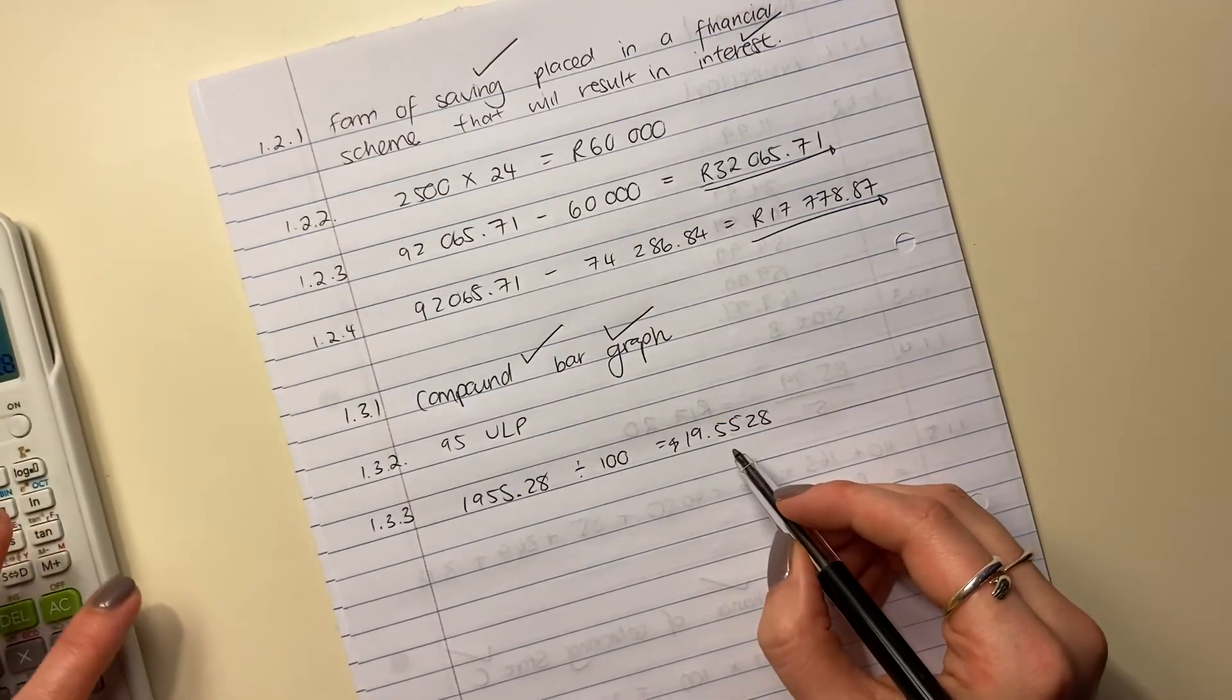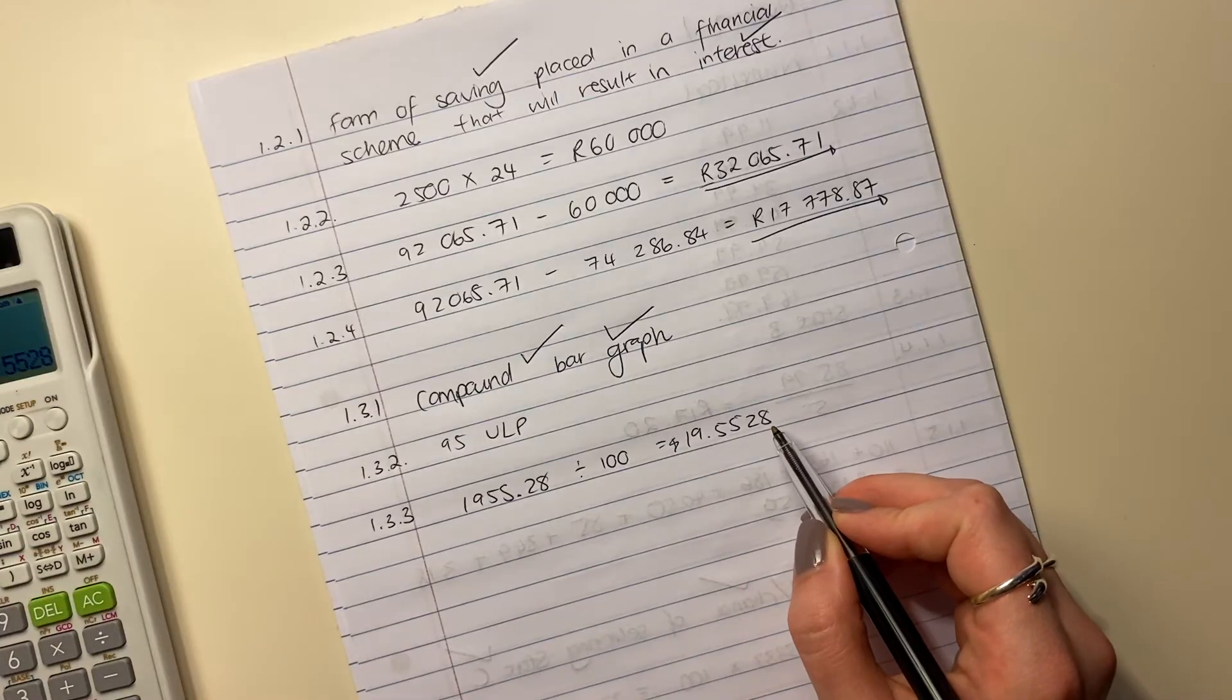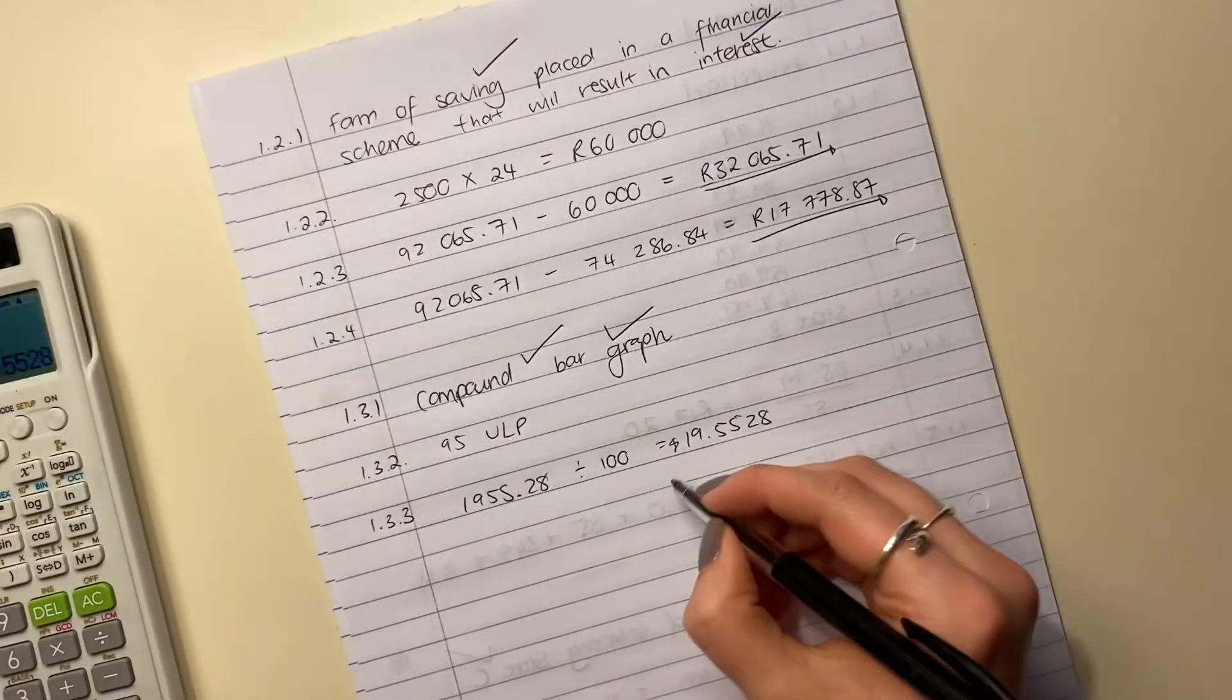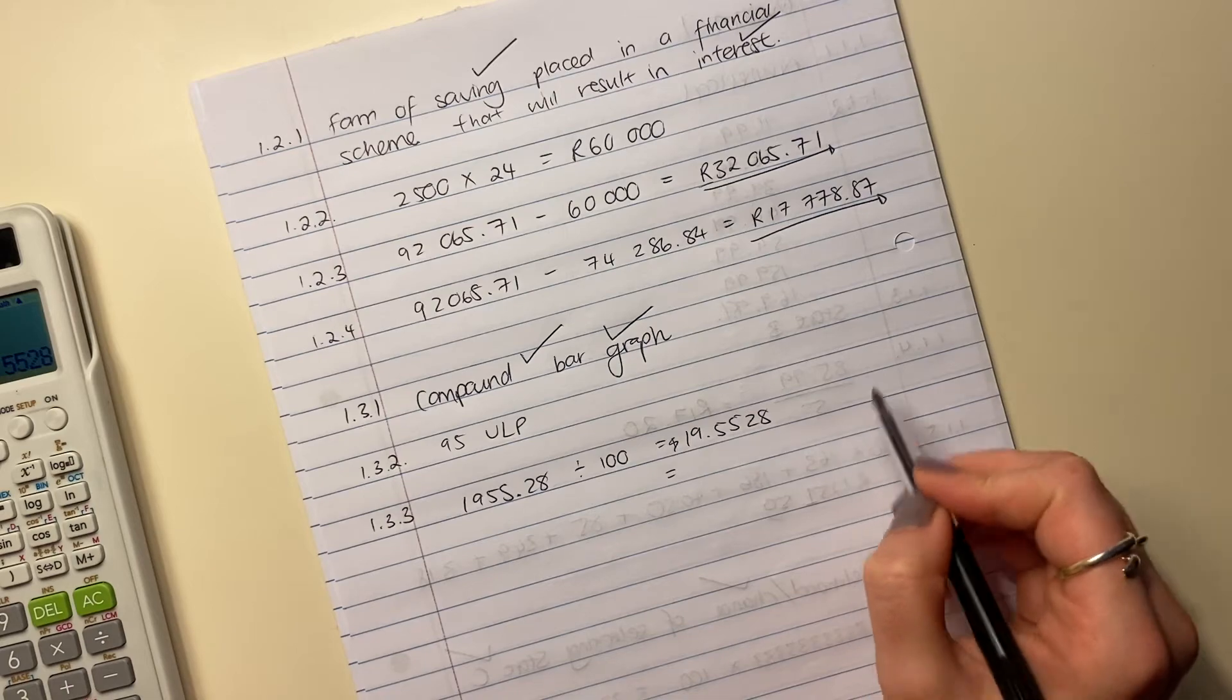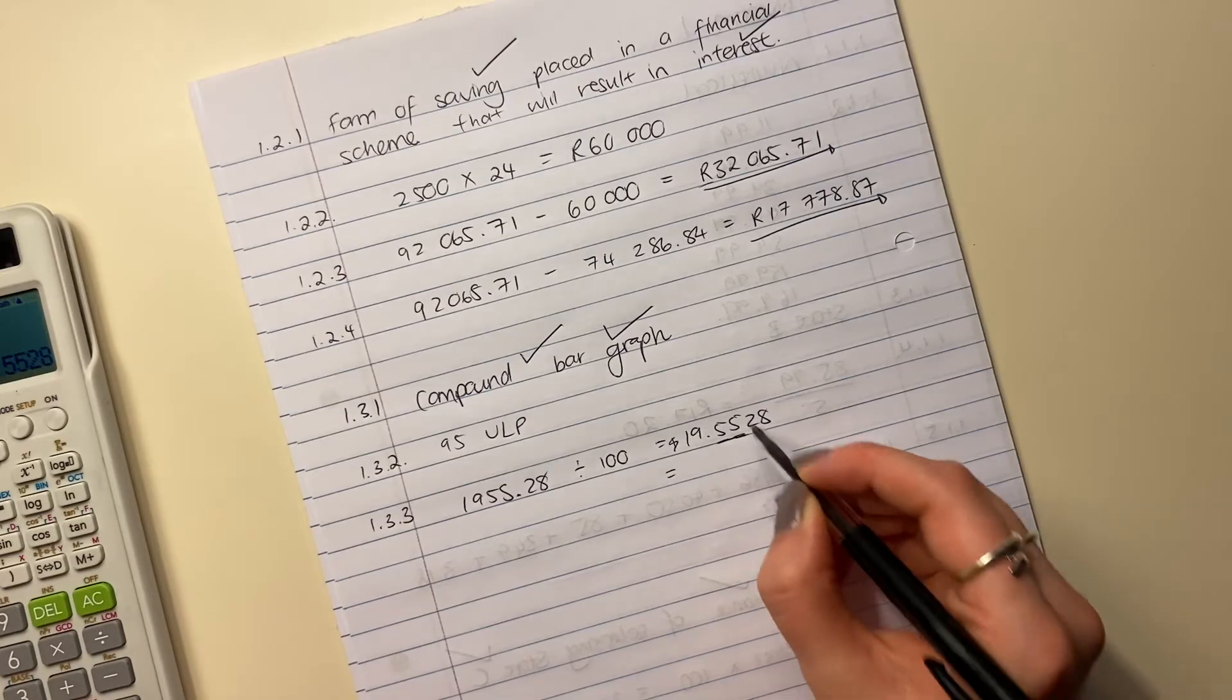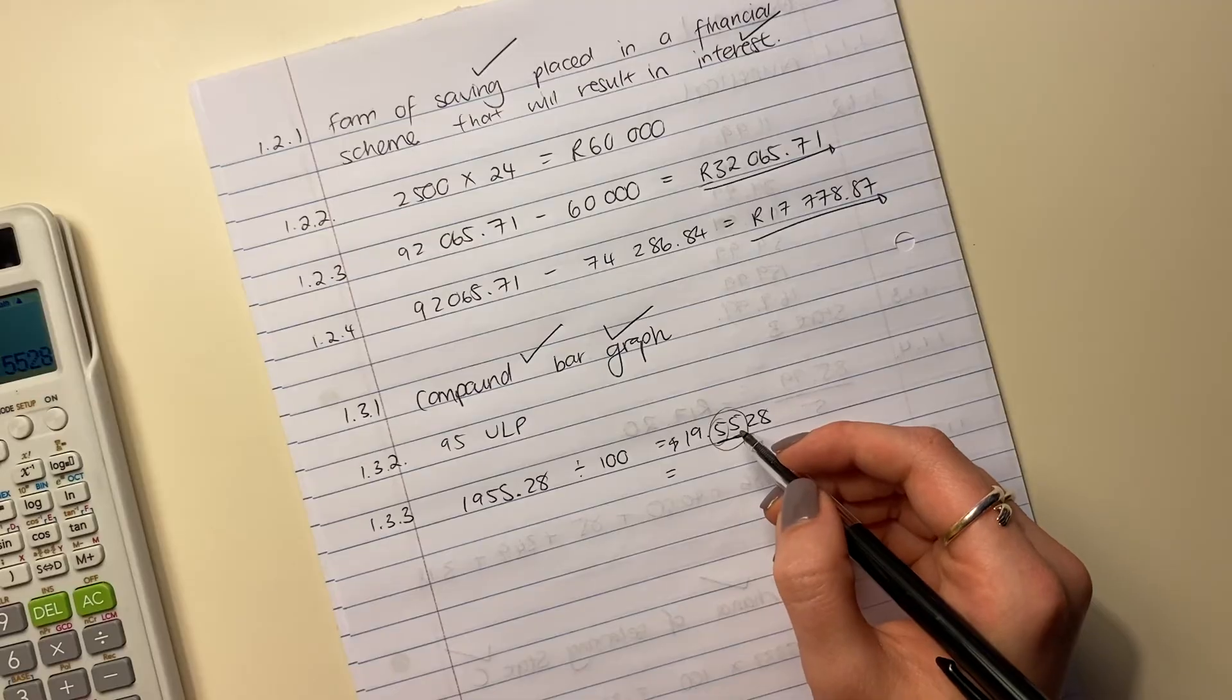I'm not going to put the rand in front right now because remember with currencies, you're only ever supposed to have two decimal places. So now it says round off your answer to the nearest 50 cents. Let's look at this. What is the nearest 50 cents? Either we go up to 20 or we go down to 19 rand 50.